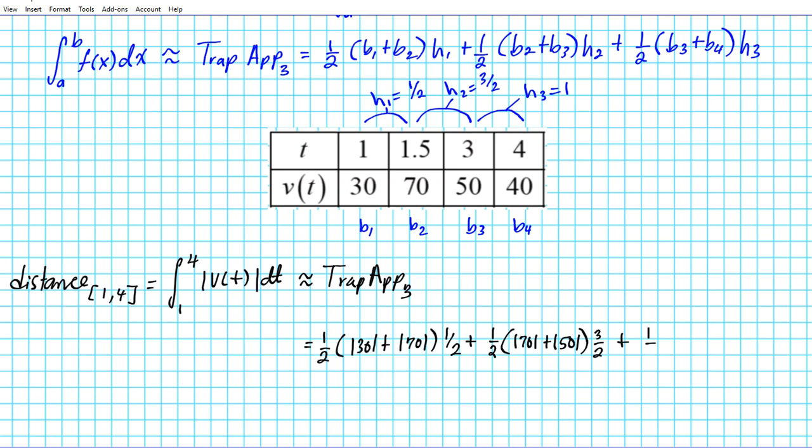Now, let's go ahead and calculate it. We're going to have one half of 30 plus 70 is 100. We can multiply one half and one half, so this one half in front can just simply become a quarter.